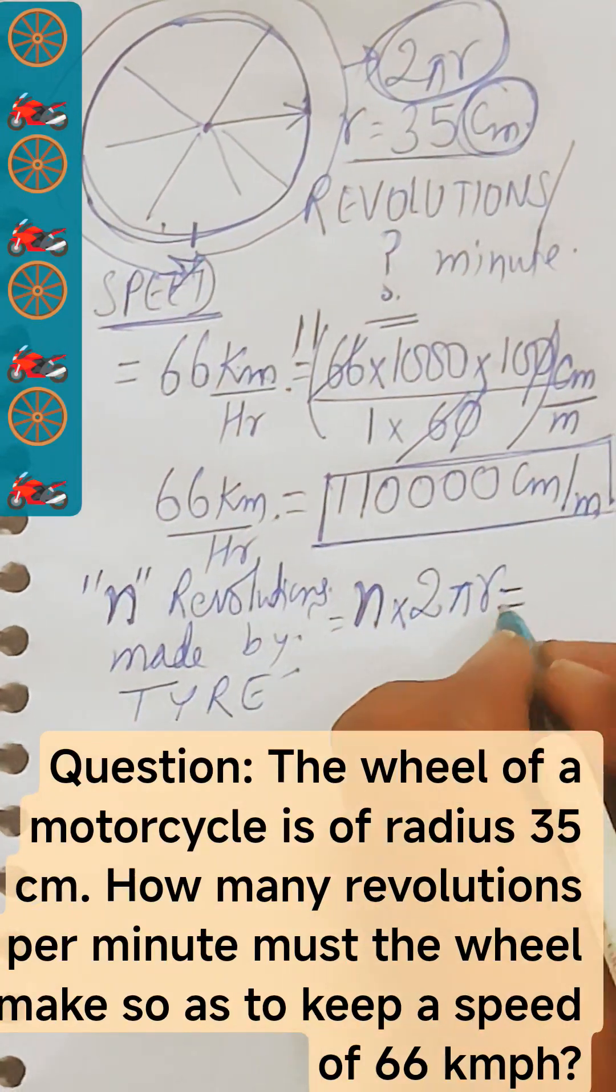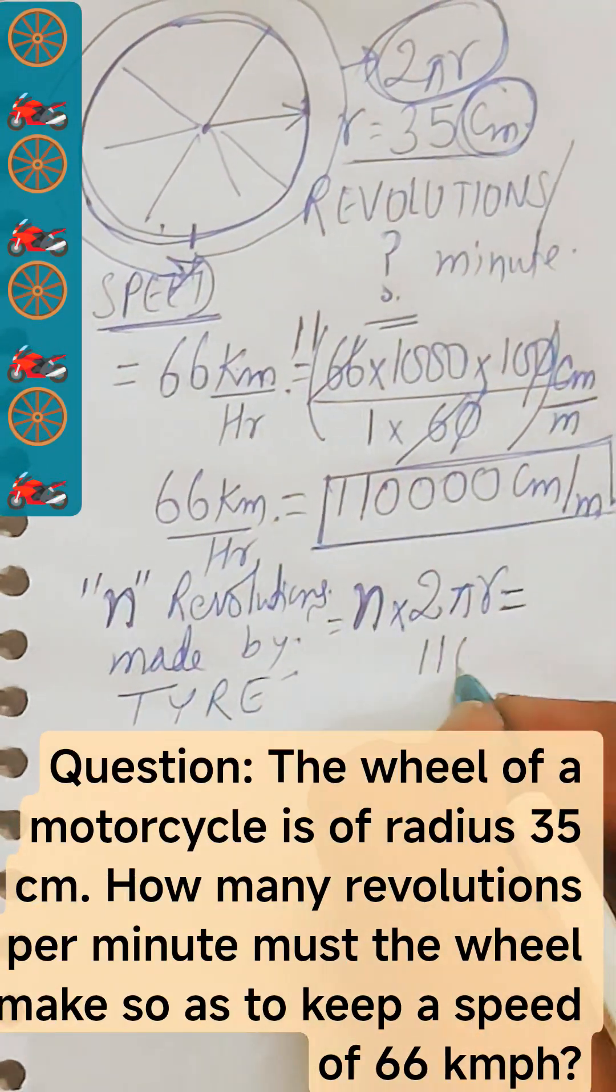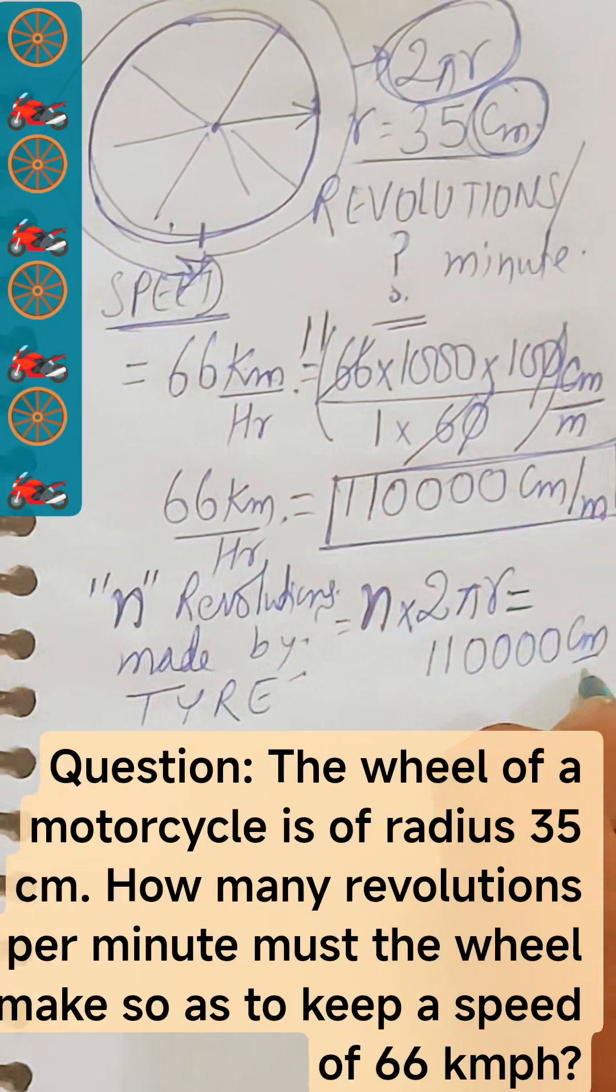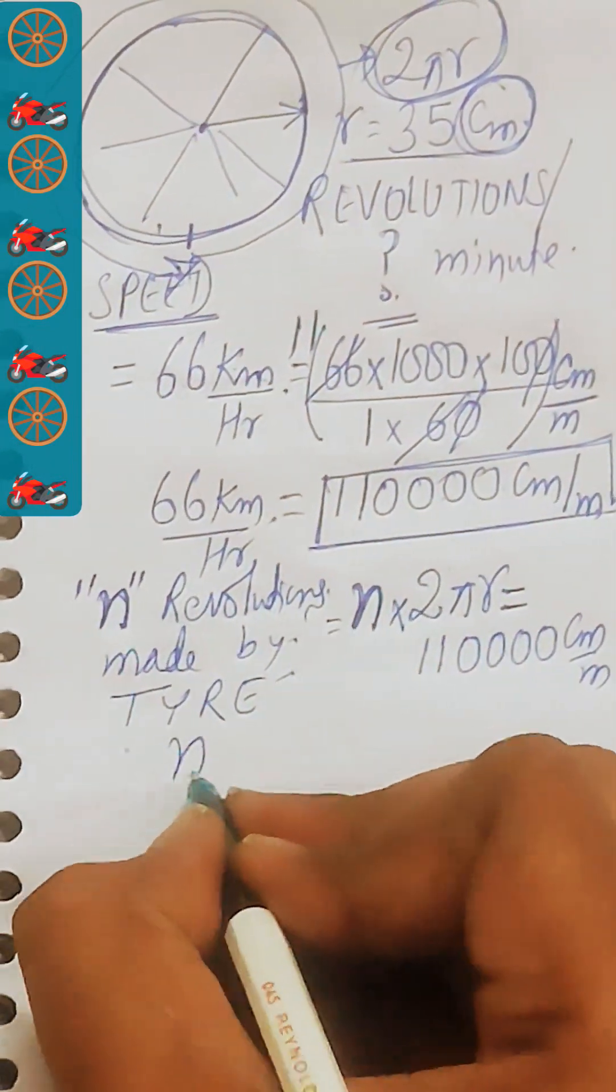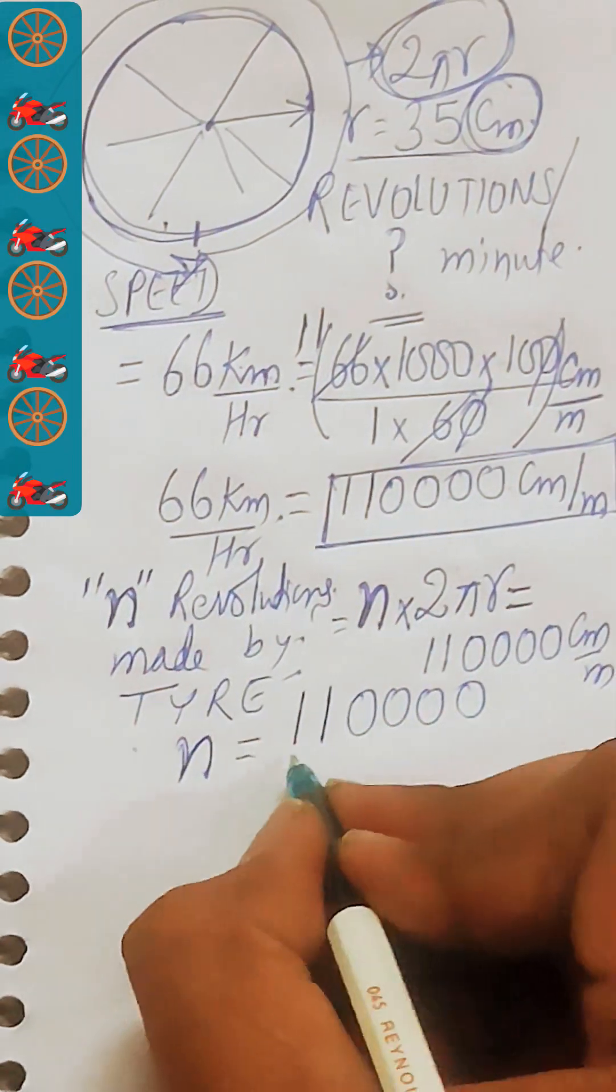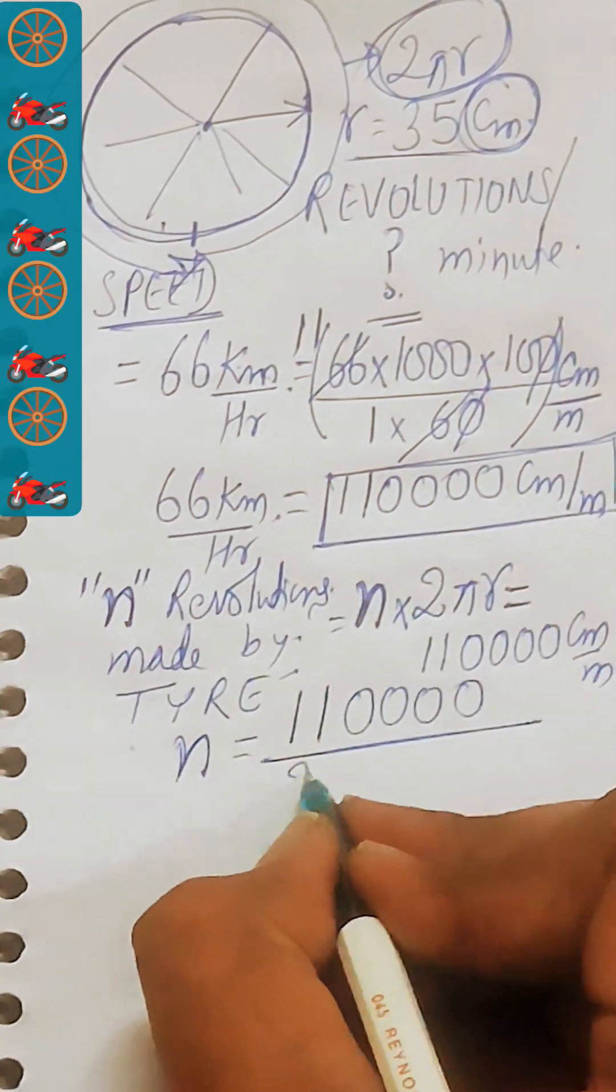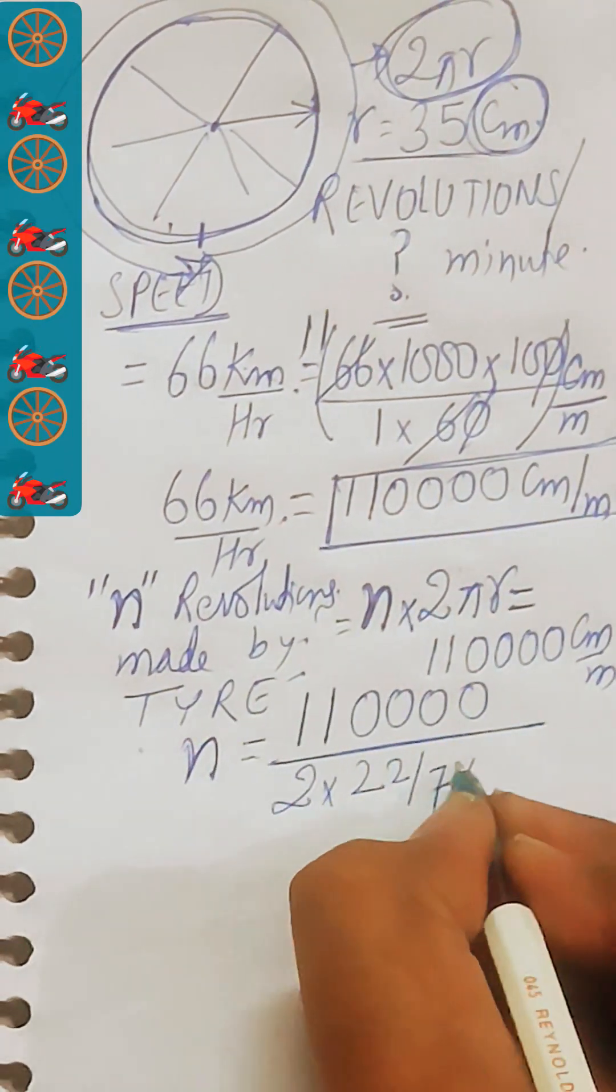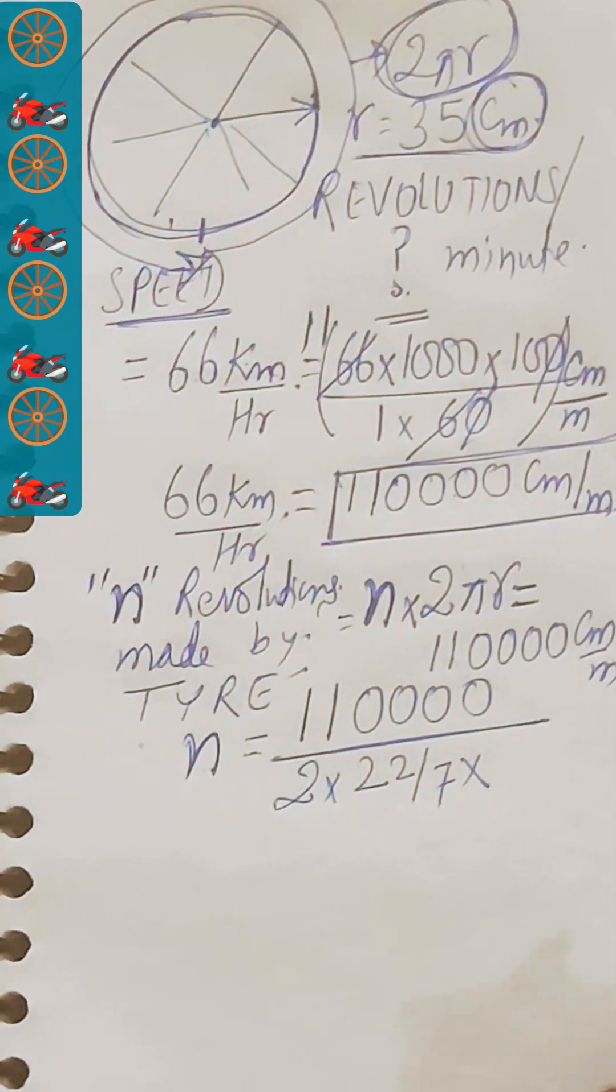This will give you a speed of 110,000 centimeter per minute. When you equate it we will get the value of n as equal to 110,000 centimeter per minute, that is 110,000 divided by 2 pi r. That is 2 pi is 22 by 7 and r of this wheel of the motorcycle is 35.